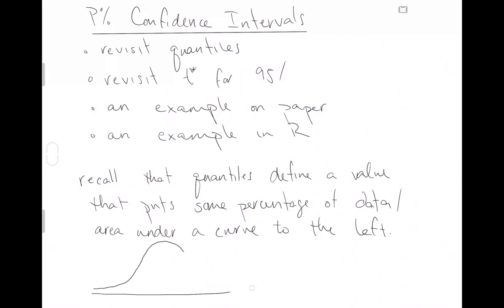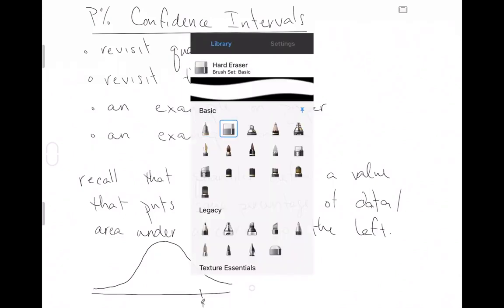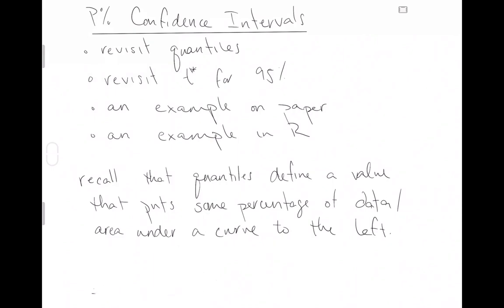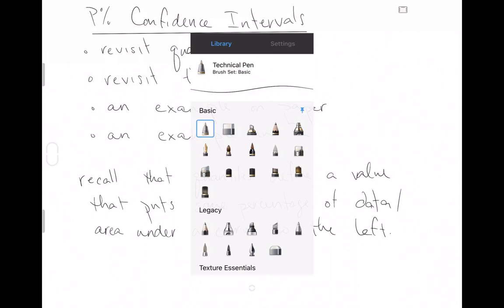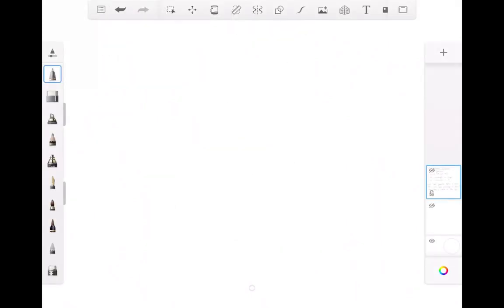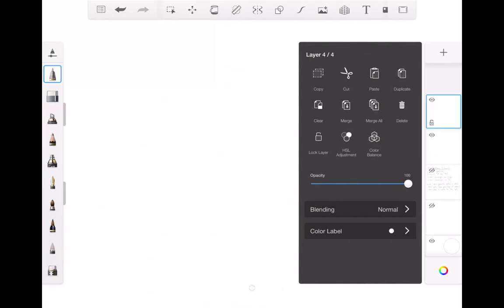Quantiles define a value that puts some area to the left. So you might say, here is a value. It's a little too narrow down there, so we're just gonna get rid of this and try to start on a new page. If you've got a normal distribution and you're interested in, let's say, Q75, that is the 75th quantile, then that number Q75 puts 75% of the area to the left of it. That's me attempting to shade there.